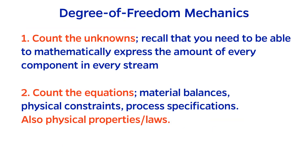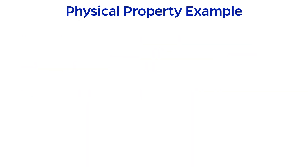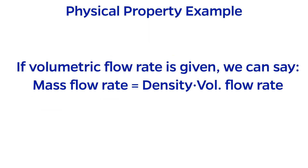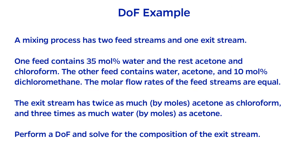There are a few other types of equations that we can add to the degree of freedom, but these will be covered later when we get to reactions, multiphase systems, and energy balances. For now though, let's add physical properties to the list of potential equations. An example of such a physical property relationship would be if the volumetric flow rate of a stream were given. Knowing the density of that stream would allow us to calculate the mass flow rate with the equation: mass flow rate equals density times volumetric flow rate.